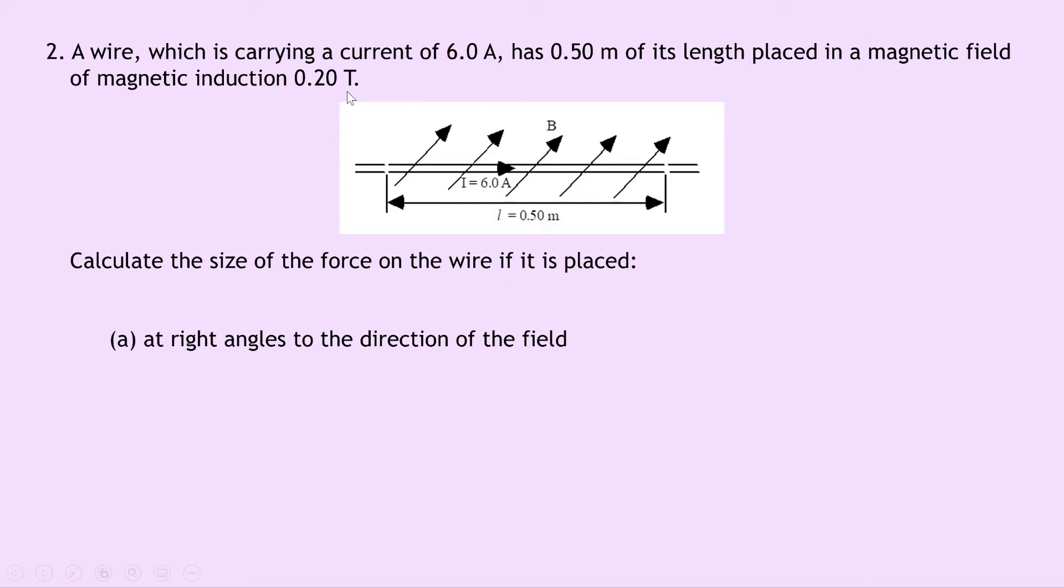Question 2 says that a wire which is carrying a current of 6.0 amps has 0.5 metres of its length placed in a magnetic field of magnetic induction 0.2 tesla as shown in this picture. Calculate the size of the force on the wire if it is placed at right angles to the direction of the field. So we've got our current flowing along this wire from left to right and the magnetic field at an angle there.